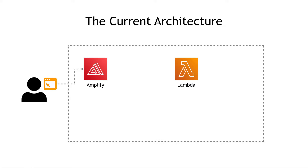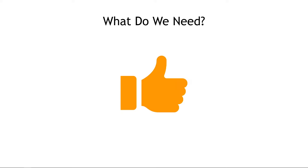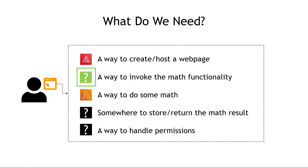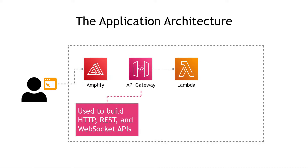So here's what we have so far: a simple HTML page hosted in Amplify and a Lambda function to do some basic math. Next, we need a way to invoke that math functionality — basically invoke that Lambda function. Our users obviously aren't going to go into the AWS console and run it themselves. So we need a public endpoint or URL that can be called to trigger that function. For that, we're going to use API Gateway — a core AWS service you can use to build your own APIs, whether HTTP, REST, or WebSocket. It's the perfect way to invoke a Lambda function. Let's go do that.